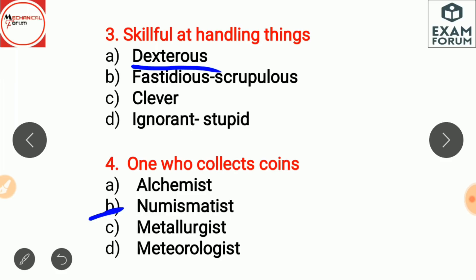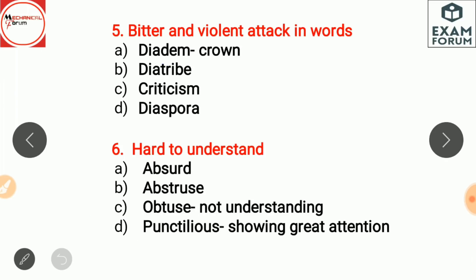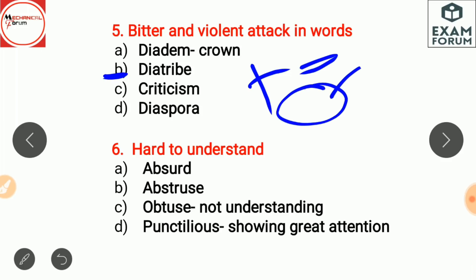A bitter and violent attack in words is a diatribe. Diadem is a type of crown. Criticism is the act of describing something as good or bad — it can be positive or negative. Diaspora is the movement of people from their own country.